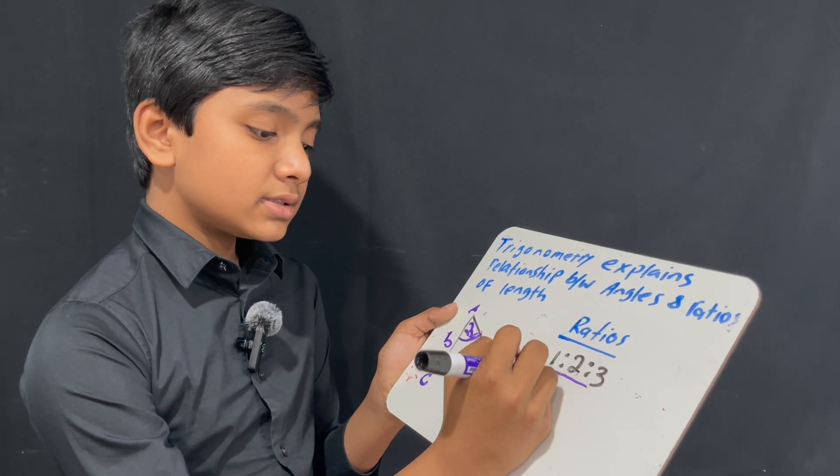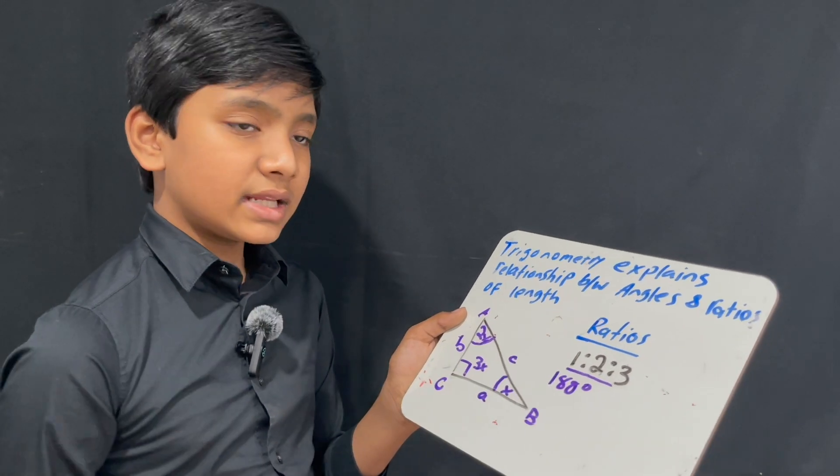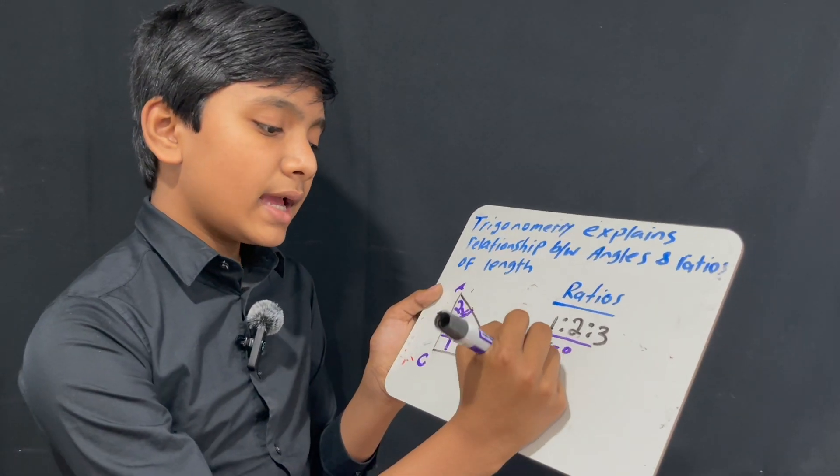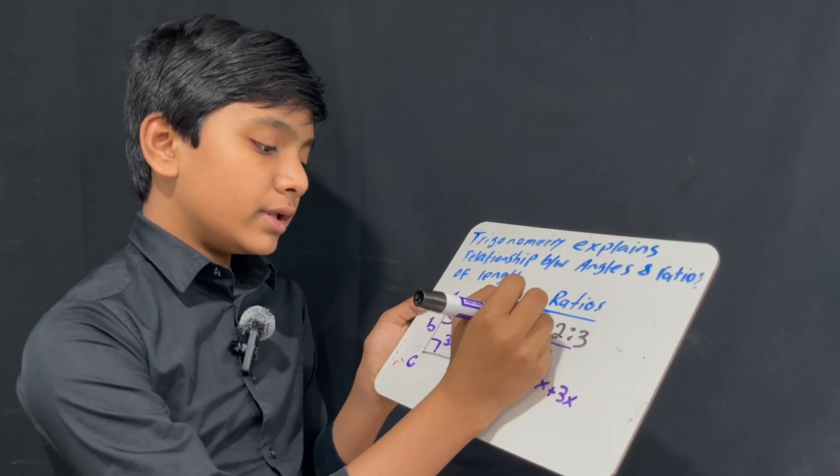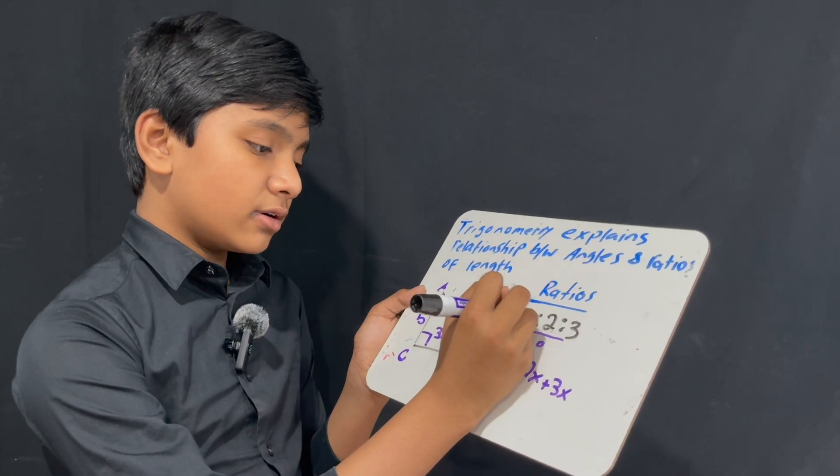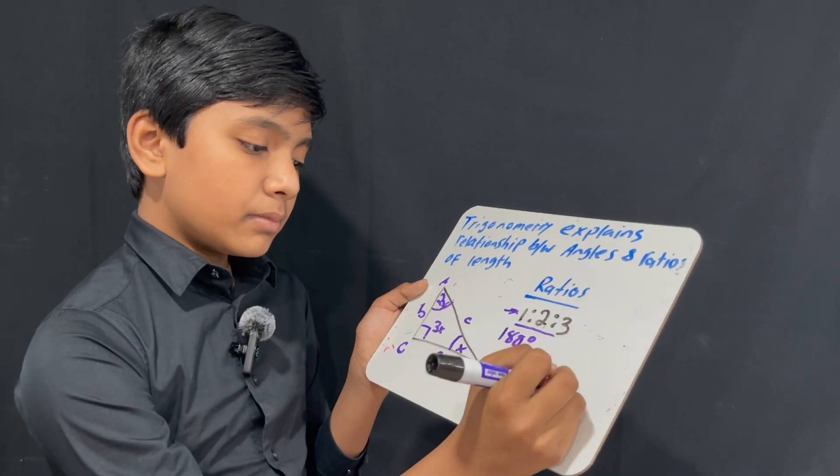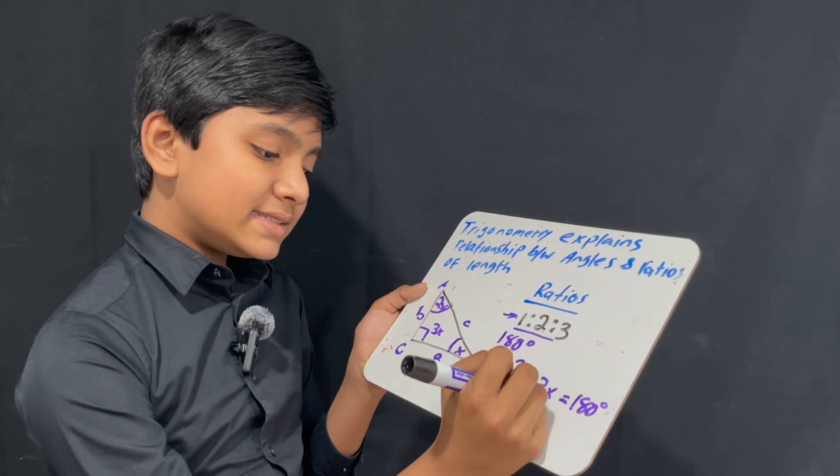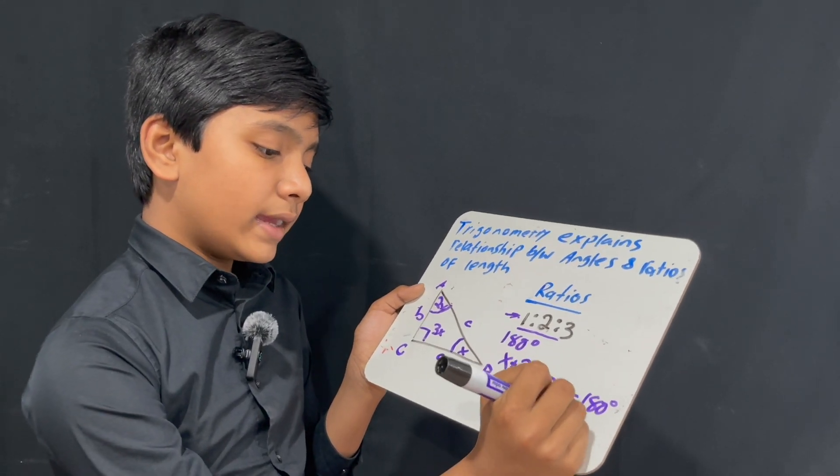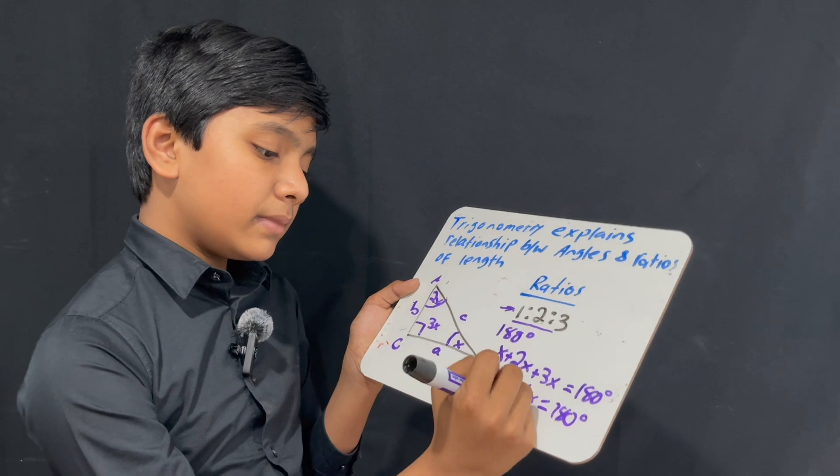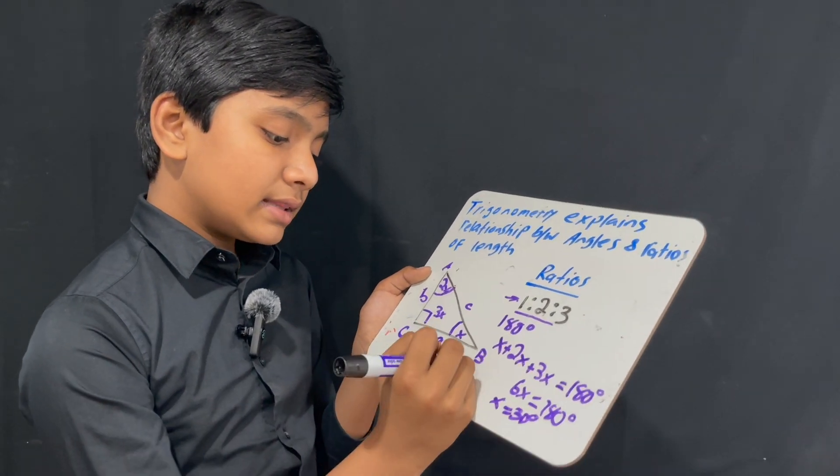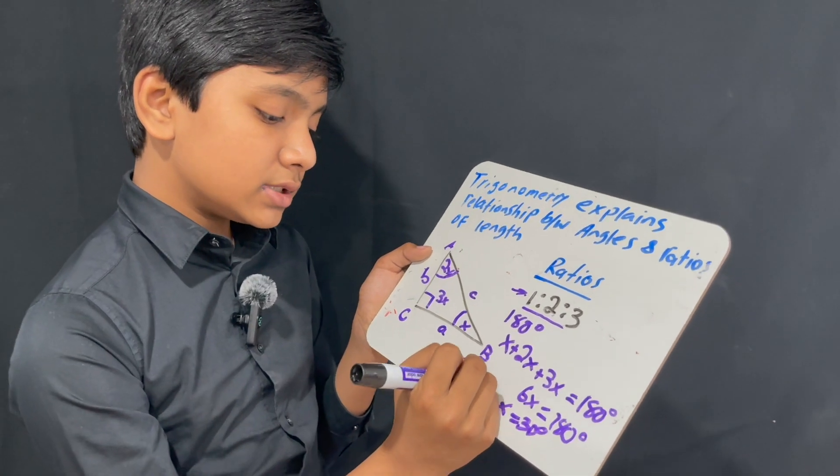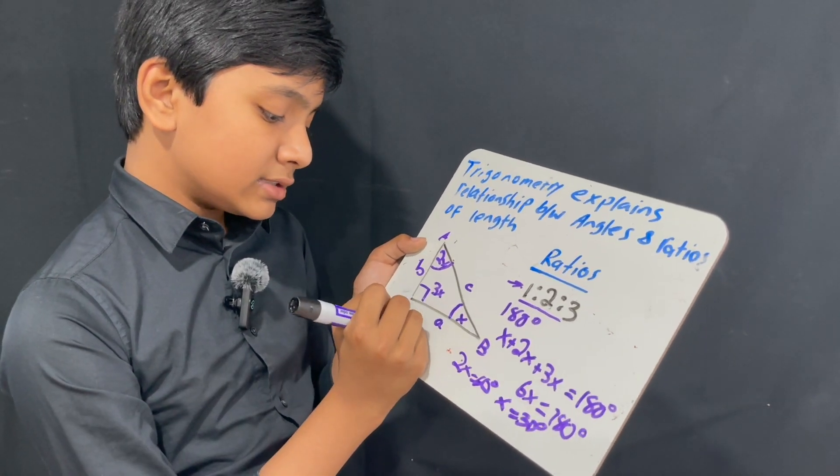So, we know that since each triangle has an angle sum of 180 degrees, x plus 2x plus 3x, and we know they're these because of this ratio, must be equal to 180. So that means 6x must be equal to 180 degrees, and that makes x 30 degrees, which means that 2x is 60 degrees, and 3x is 90 degrees.